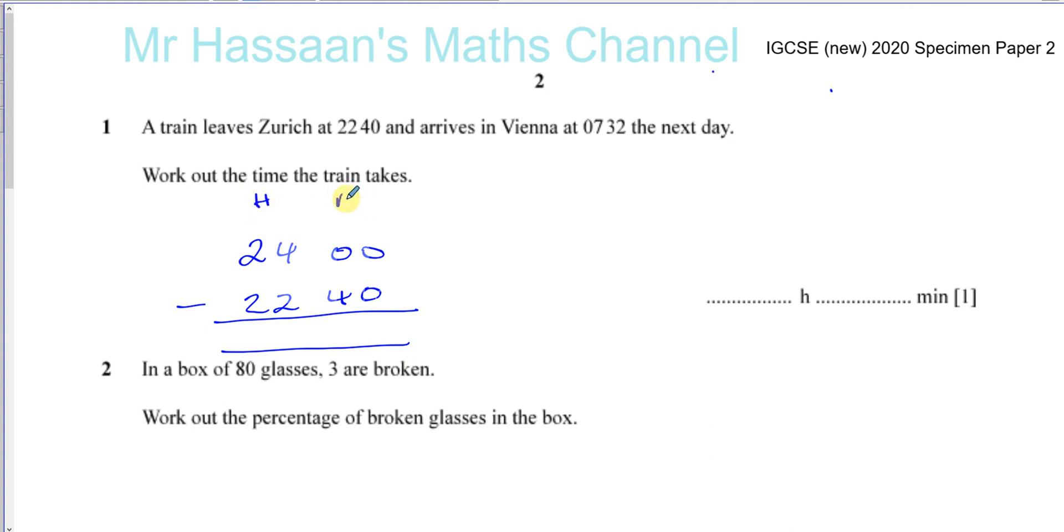Now, this is like the hours column. This is like the minutes column. If you subtract these, you can't do 40 taken away from zero. But what you do is you borrow one hour from here. So that becomes 23 hours. And you put one hour in the minutes column. Now, when you put one hour in the minutes column, you don't write one because one hour is not one minute. It's 60 minutes.